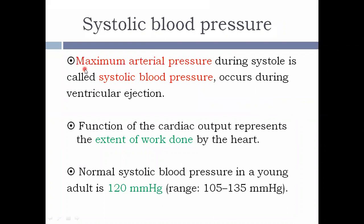Systolic blood pressure is the maximum arterial pressure recorded during systole. This occurs during ventricular ejection — when the ventricle contracts, there occurs ventricular systole, and the blood pressure recorded at that time is called the systolic blood pressure. The systolic blood pressure is a function of the cardiac output; it determines the extent of work done by the heart. The normal systolic blood pressure ranges from 105 to 135 mmHg in a young adult.